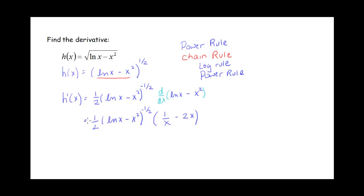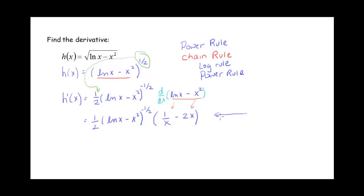Welcome back. If I'm going to take the derivative, the first thing I do is bring this power down in front — that's where I get that 1 half. Then I have my inside function to one less power, so 1 half minus 1 gives us negative 1 half. I'm multiplying by the derivative of this inside function. When I go to take the derivative of natural log of x, I get 1 over x. When I take the derivative of x squared, I get 2x. I would leave my answer just like that.